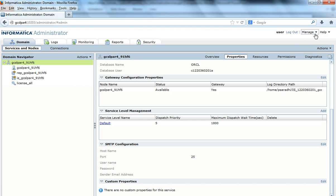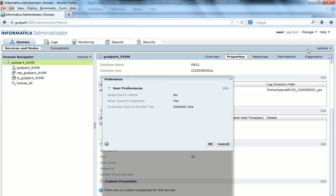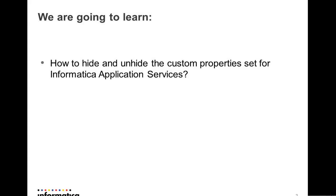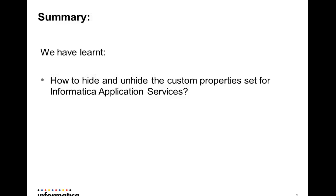So this configuration is done at the user level. If this user also does not want to see the custom properties, they can go to 'Manage Preferences' and change 'Show Custom Properties' to no, so they would not see the custom properties for the domain or the application services. To summarize: when 'Show Custom Properties' is set to yes, custom properties are visible; when set to no, they are not visible. But visible or not, if a custom property is set for an application service or domain, it is always in effect.